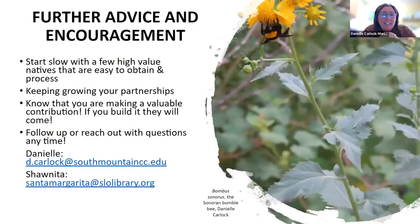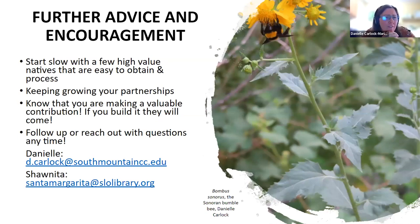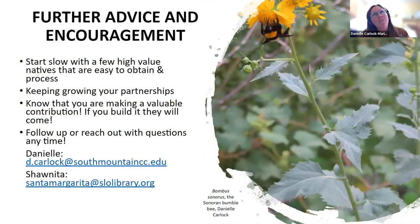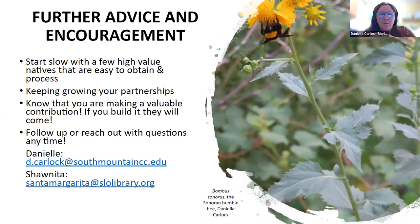Some further advice and encouragement: the seed library I run has about 35 to 40 native plants — trees, shrubs, grasses, a variety — but you can start slow. Choose a few really high-value natives that are easy to obtain and process in your area. Even if it's only five species, that will go a long way. Keep growing your partnerships and find those people. I really believe that if you build a native seed library, people will come — and then wildlife will benefit from the plants.